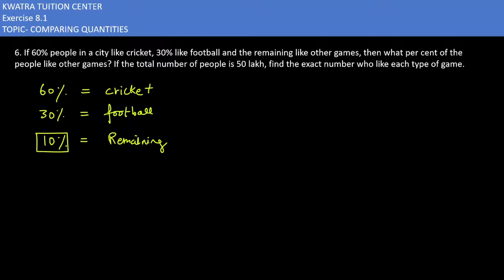If the total number, 100% is the total of the percentage, then 60% will be minus and 30% will be minus. 60% plus 30% is how much will you get? It is 90. 100% minus 90% is 10%.